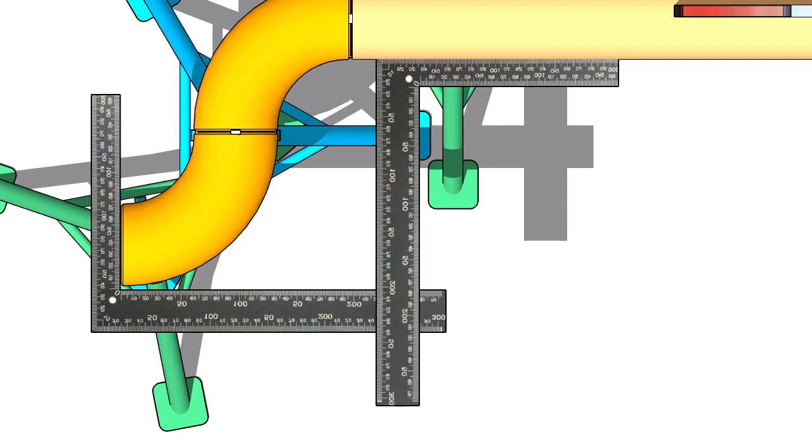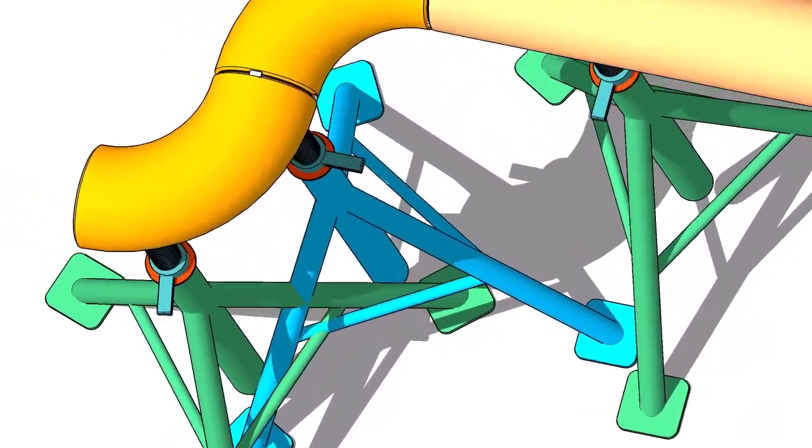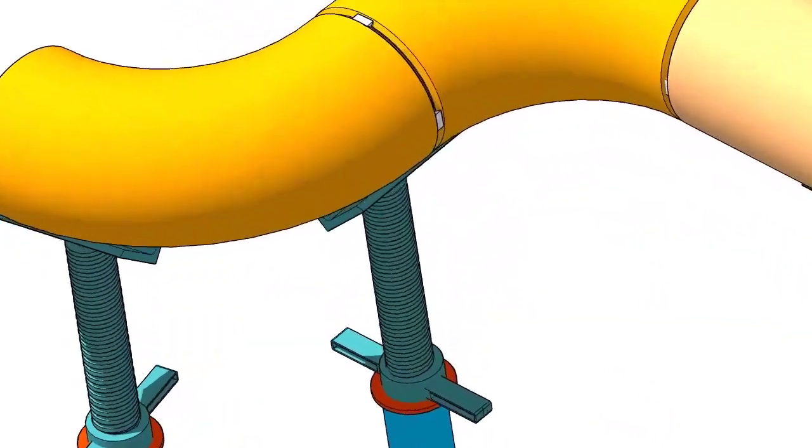Hold two right angles, one on the face of the elbow and one on the pipe side. Now use another right angle and check the squareness. Tack weld on both sides of the elbow.